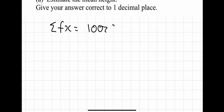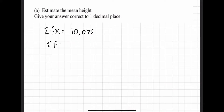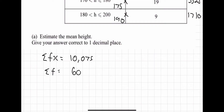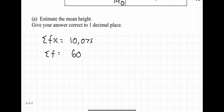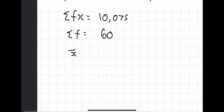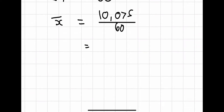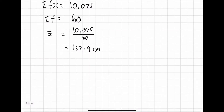The sum of fx is 10,075. The sum of f — adding up the frequencies — is 7 plus 10 plus 15 plus 19 plus 9, which is 60. So x-bar equals the sum of fx, 10,075, divided by the sum of f, 60. Typing that into the calculator gives an answer of 167.9 centimetres, correct to one decimal place.